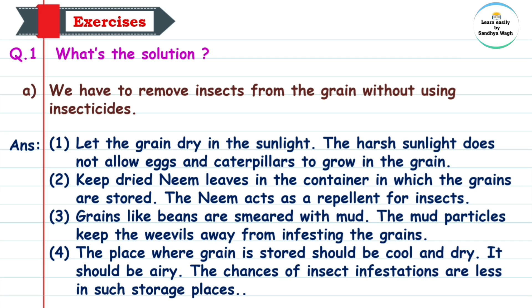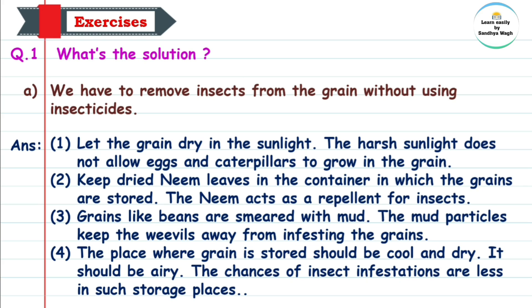Grains like beans are smeared with mud. 'Smeared' means to spread a sticky substance on something. Grains like beans are coated with mud. The mud particles keep the weevils away from infesting the grains. 'Weevils' means insects — due to the mud particles on beans, weevils do not grow.